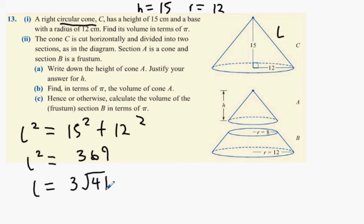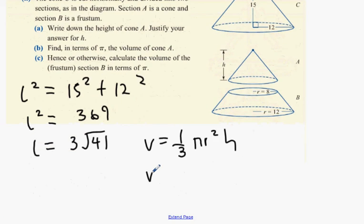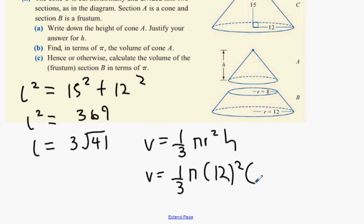The keyword is volume, so we use the volume formula: one third pi r squared h. Volume equals one third times pi times 12 squared times 15. Radius is 12 and height is 15. That gives us 720π. First answer done.